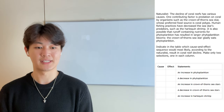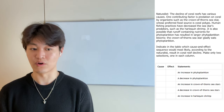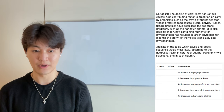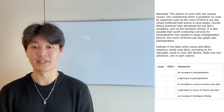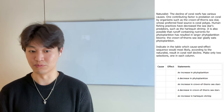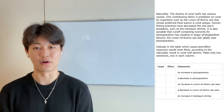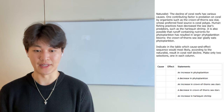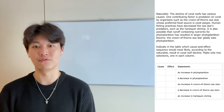The question says: a naturalist says the decline of coral reefs has various causes. One contributing factor is predation on coral by organisms such as the crown of thorns sea star, whose preferred food source is coral polyps. Human fishing practices have decreased the sea star's predators such as the harlequin shrimp. It is also possible that runoff containing nutrients for phytoplankton has resulted in larger phytoplankton blooms. The crown of thorns sea star gladly eats phytoplankton. So it seems we have this sort of relationship going forth. The question asks: indicate in the table which cause and effect sequence would most likely, according to the naturalist, result in a coral reef decline. Make two selections, one in each column. So in the passage we have this massive cause and effect chain, and we just need to find two things which fit nicely in that chain.